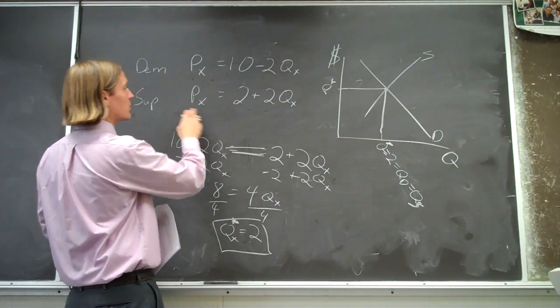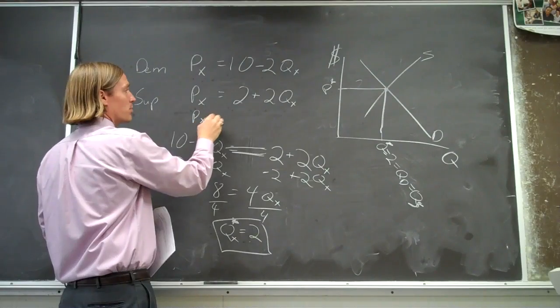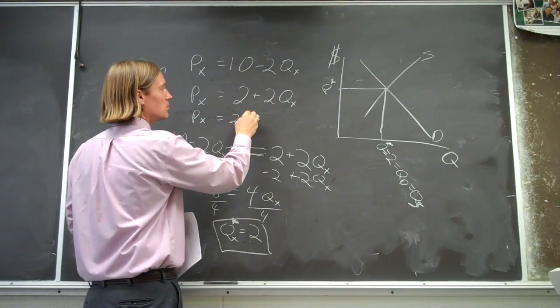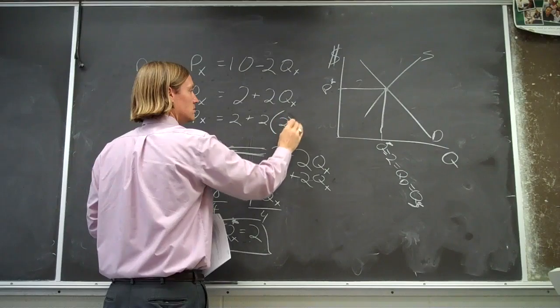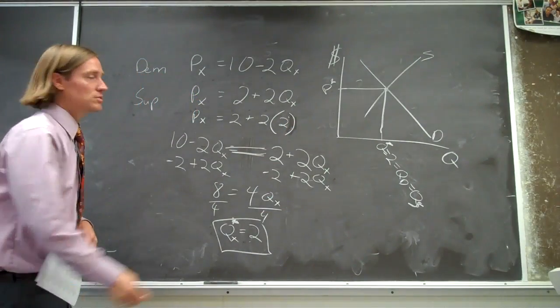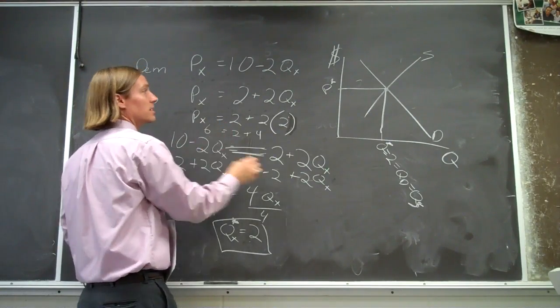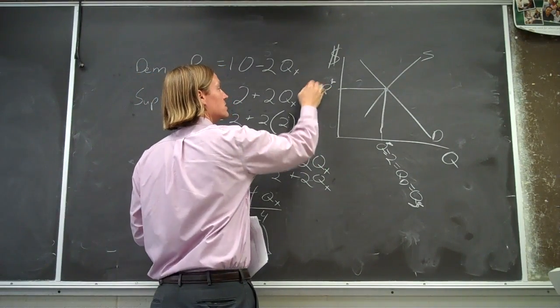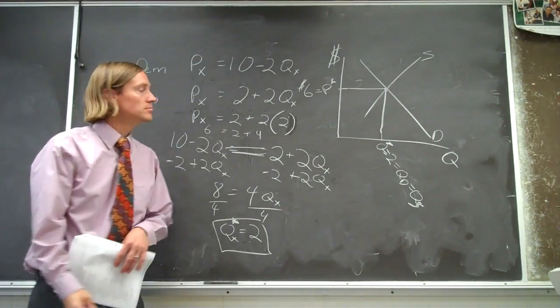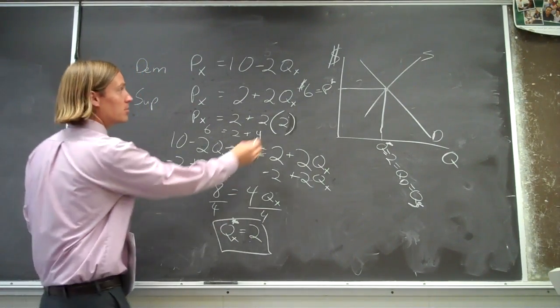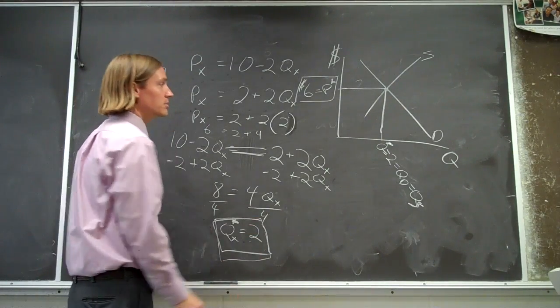So I'm running out of room, but if we were to plug it right into this supply function, the price is equal to 2 plus 2 times 2, right? So now we've got 2 plus 4, so the price is 6. So our equilibrium price is 6 bucks. We've got equilibrium price of 6, equilibrium quantity of 2.